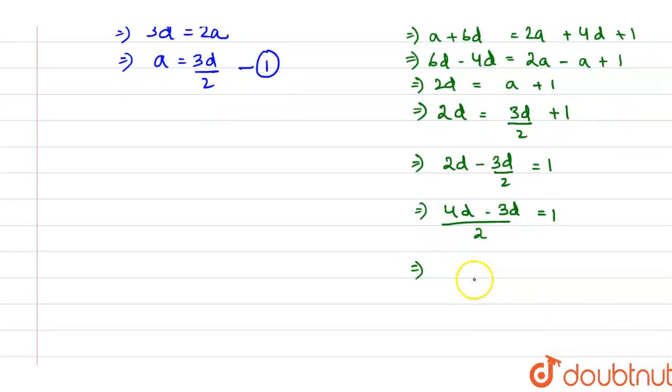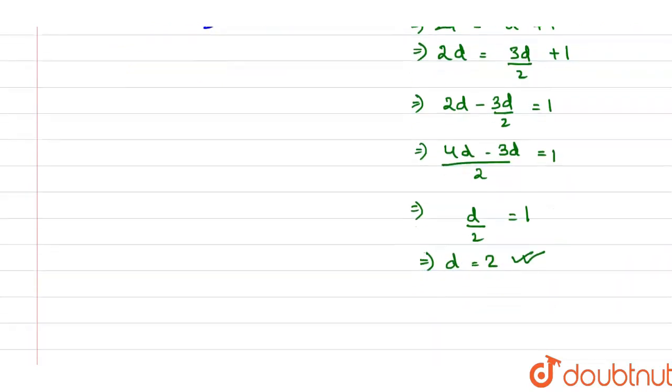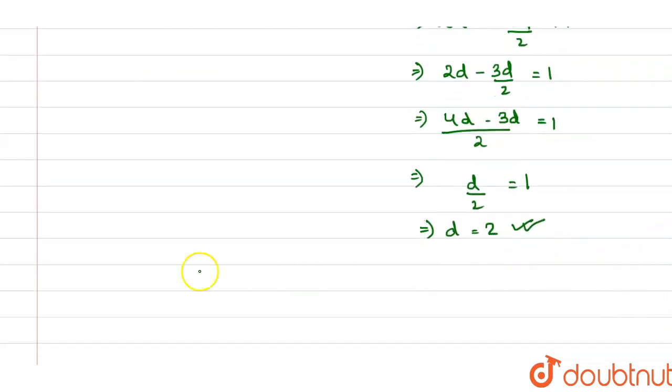So, this gives us d by 2 is equals to 1 or d is equals to 2. So, we have the common difference. Now, we can put this value of d in equation number 1.